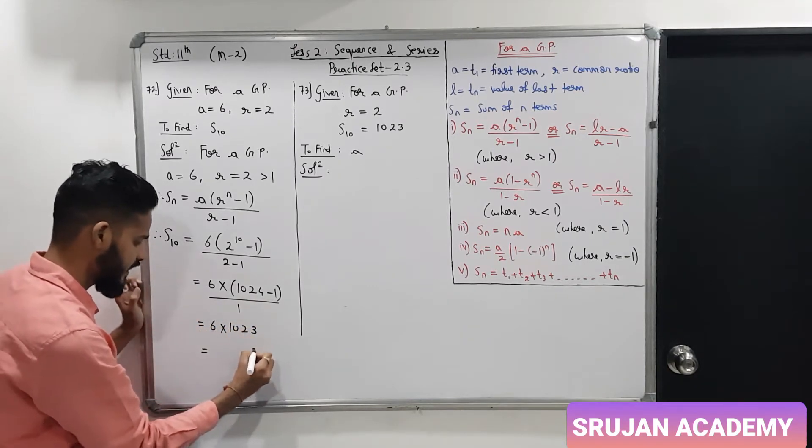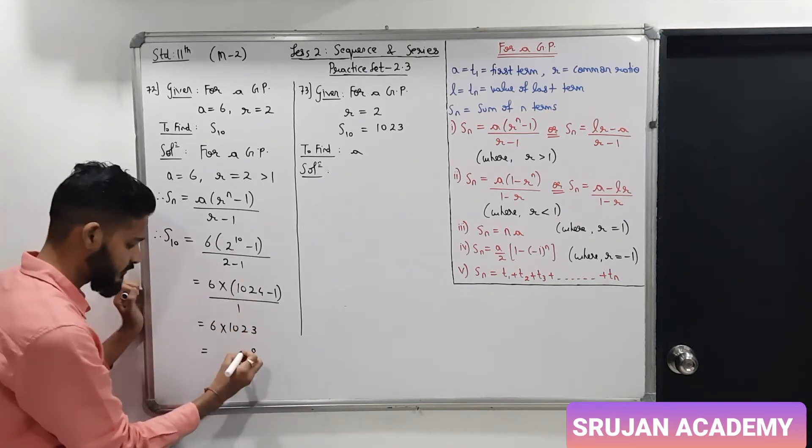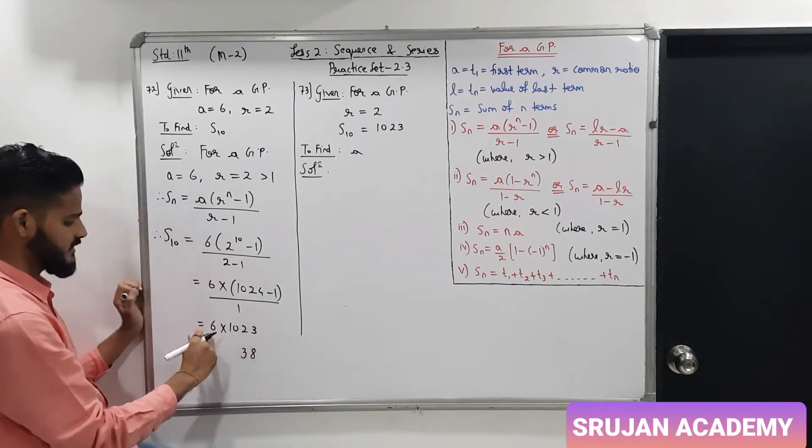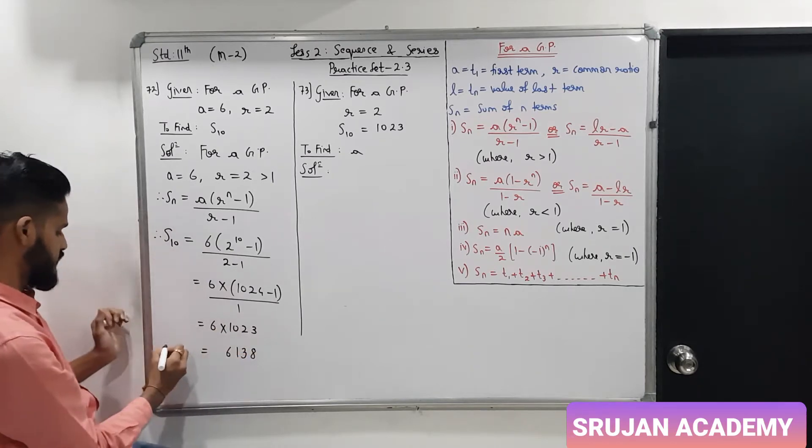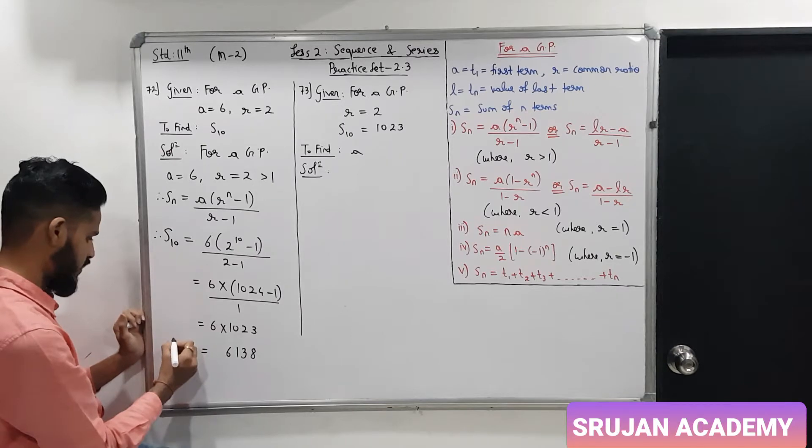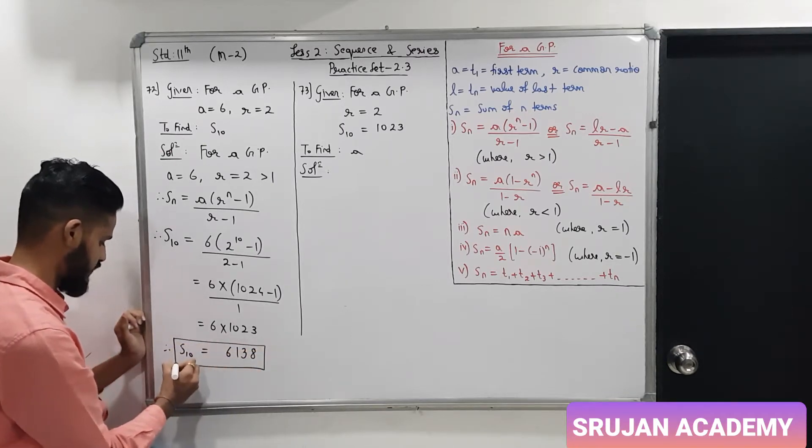So, 6 times 3 is 18, 1 carry, 6 times 2 is 12 plus 1, 13, 1 carry. 6 times 0 is 0 and carried 1, 6 times 1 is 6. So, the S10 is 6138.